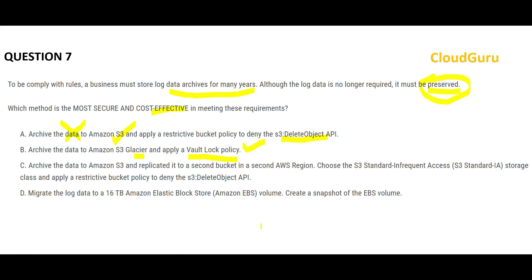Option C is very expensive: first you are using S3 which is expensive, second you are replicating the bucket to another AWS region increasing cost further, even if storing in infrequent access. Then it says deny delete object access. This might work functionally but is not cost-effective compared to option B. If S3 Glacier already gives you this option natively, why reinvent the wheel with a bucket policy?